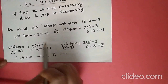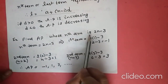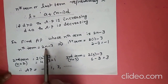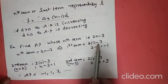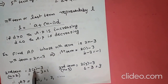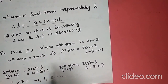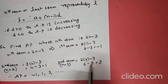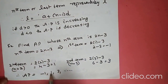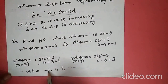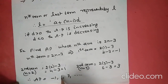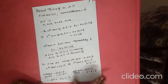Find the AP whose nth term is 2N minus 3. Substituting N=1: 2×1 - 3 = -1. Second term, substituting N=2: 2×2 - 3 = 1. Third term, substituting N=3: 2×3 - 3 = 3. Therefore the AP is -1, 1, 3. Here A equals -1. The common difference is: second term minus first term, or third term minus second term: 3 minus 1 equals 2.